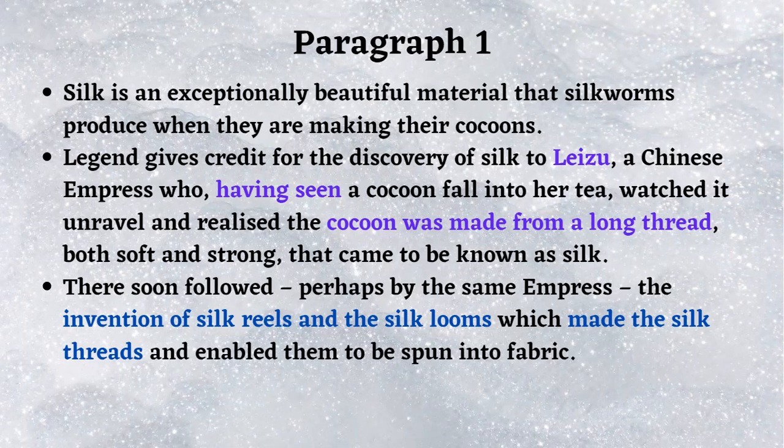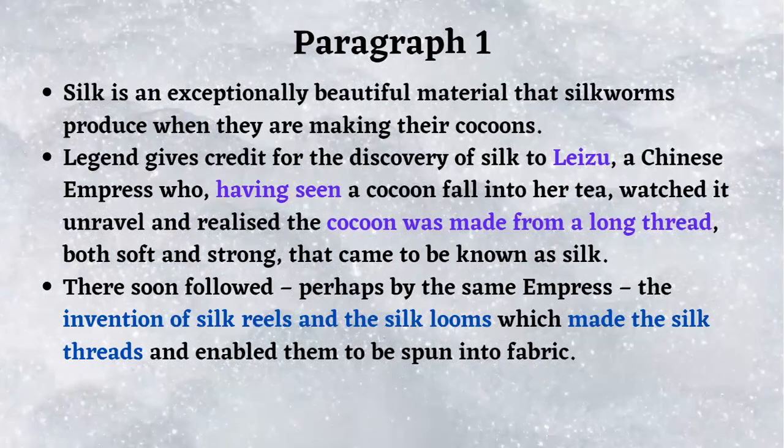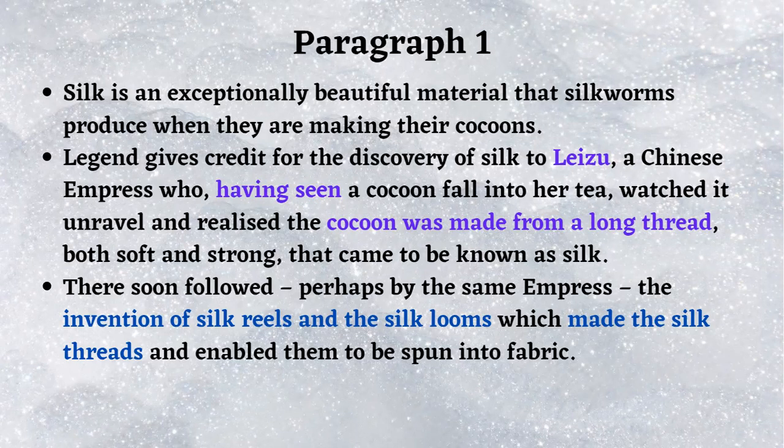Here is the first sentence: 'Silk is an exceptionally beautiful material that silkworms produce when they are making their cocoons.' Legend gives credit for the discovery of silk to Lizu, a Chinese empress who, having seen a cocoon fall into her tea, watched it unravel and realized the cocoon was made from a long thread — both soft and strong — that came to be known as silk.